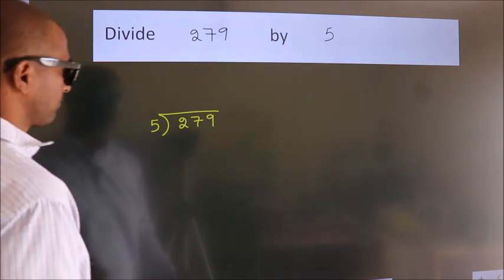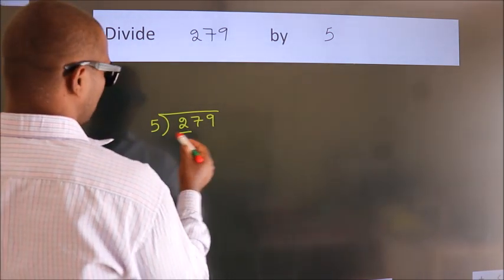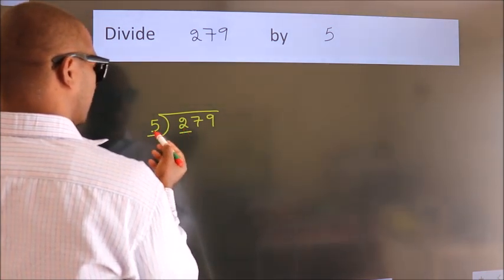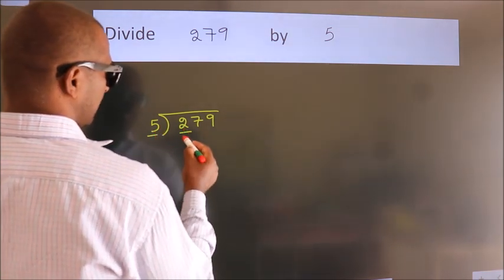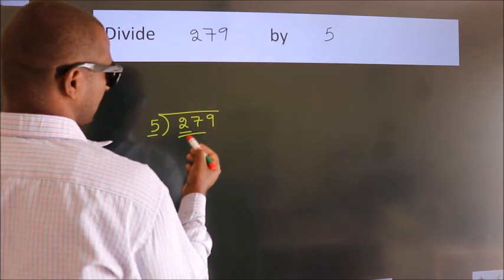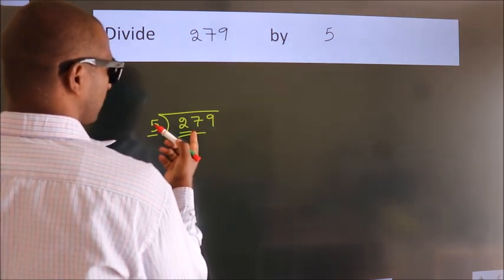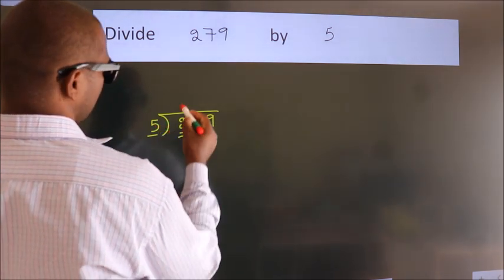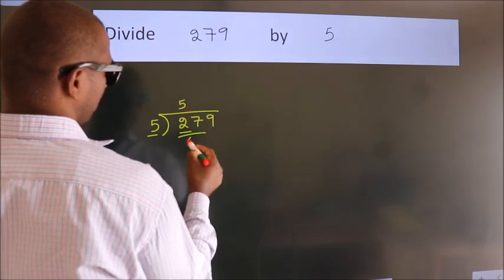Next, here we have 2. Here 5. 2 is smaller than 5, so we should take 2 numbers: 27. A number close to 27 in the 5 table is 5 times 5, which is 25.